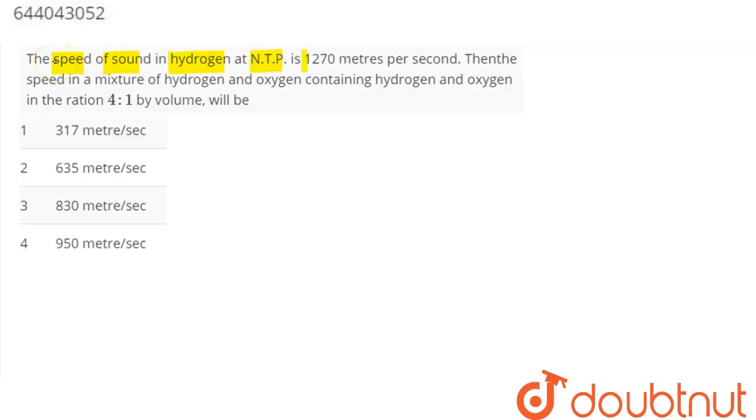The speed of sound in hydrogen at NTP is 1270 meters per second. Then the speed in a mixture of hydrogen and oxygen containing hydrogen and oxygen in the ratio 4 is to 1 by volume is: